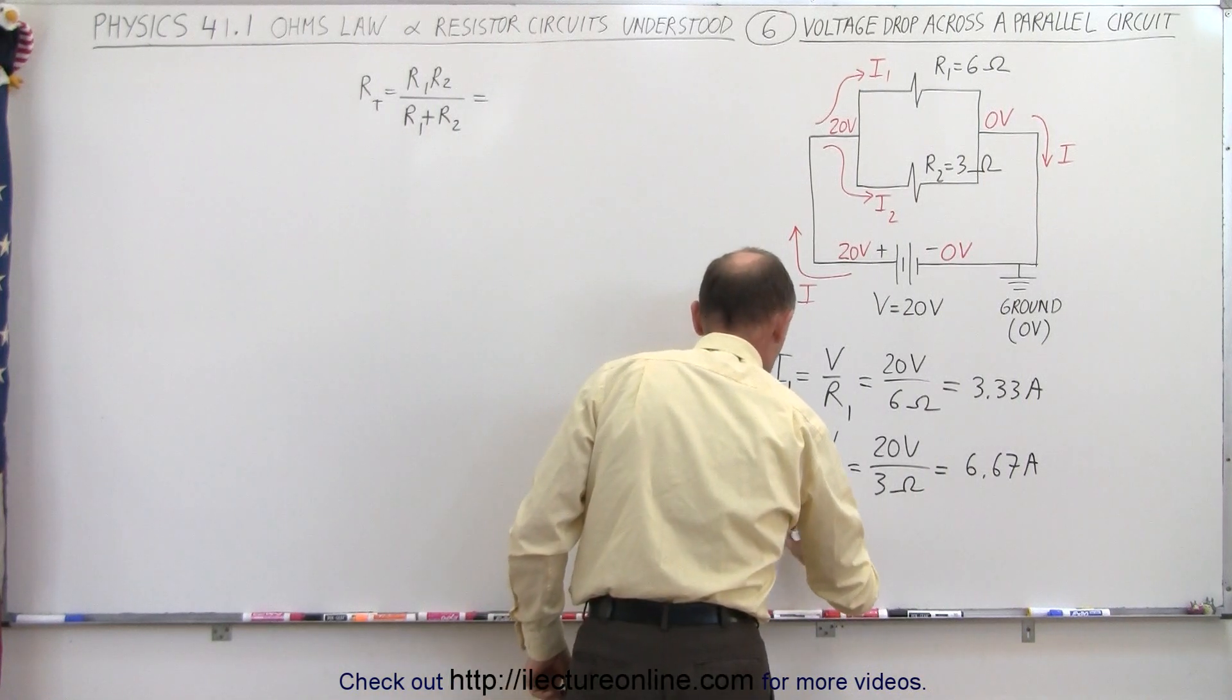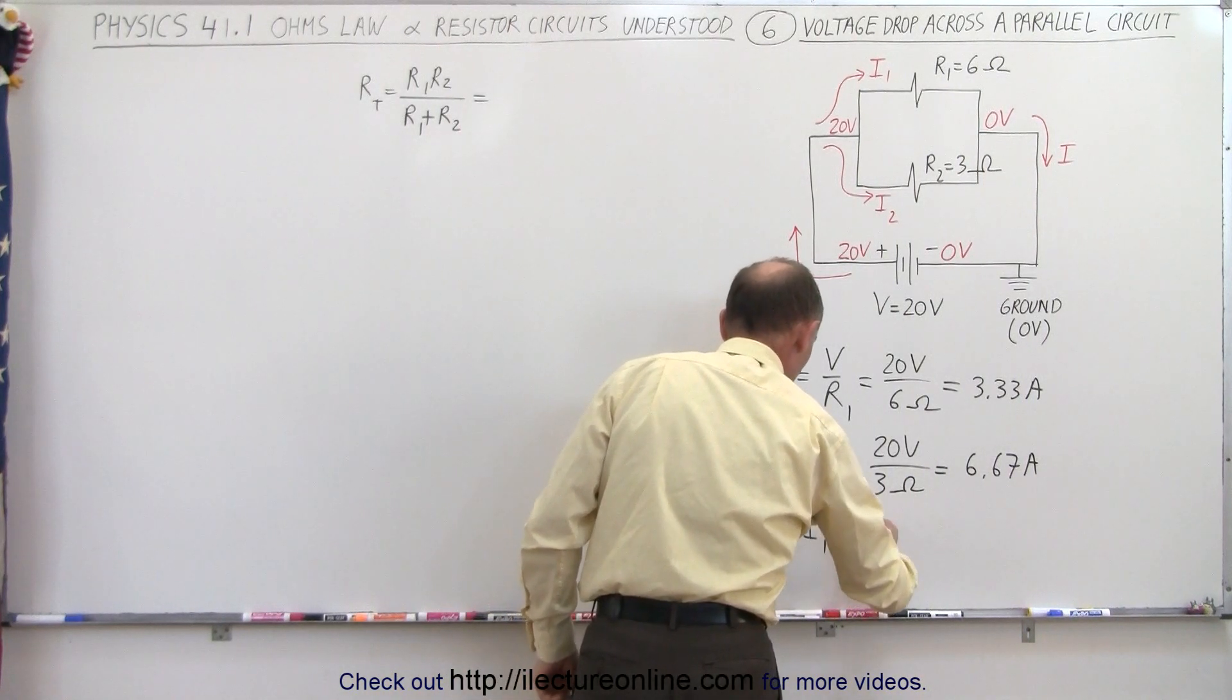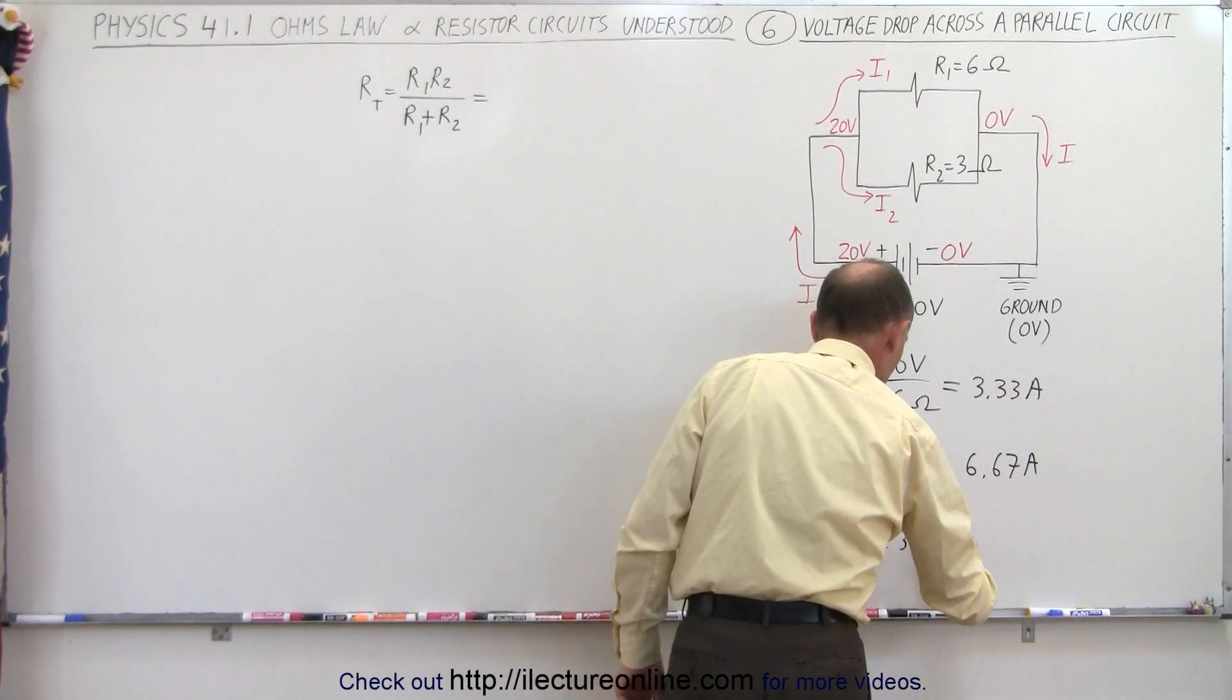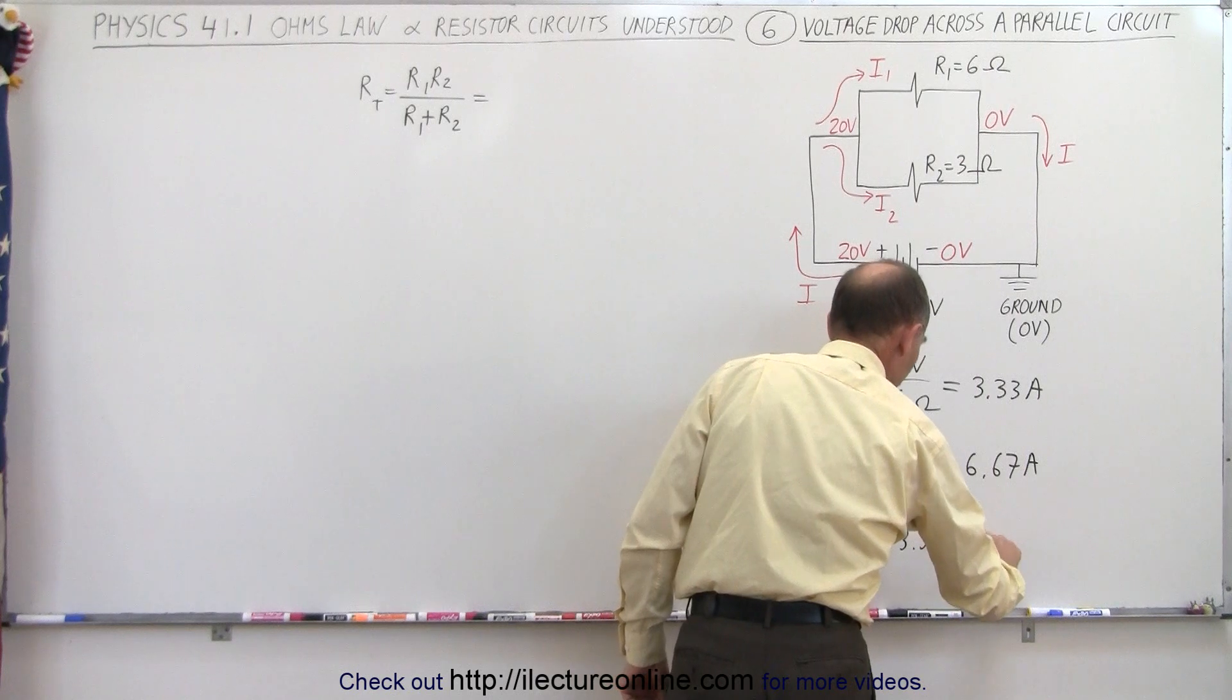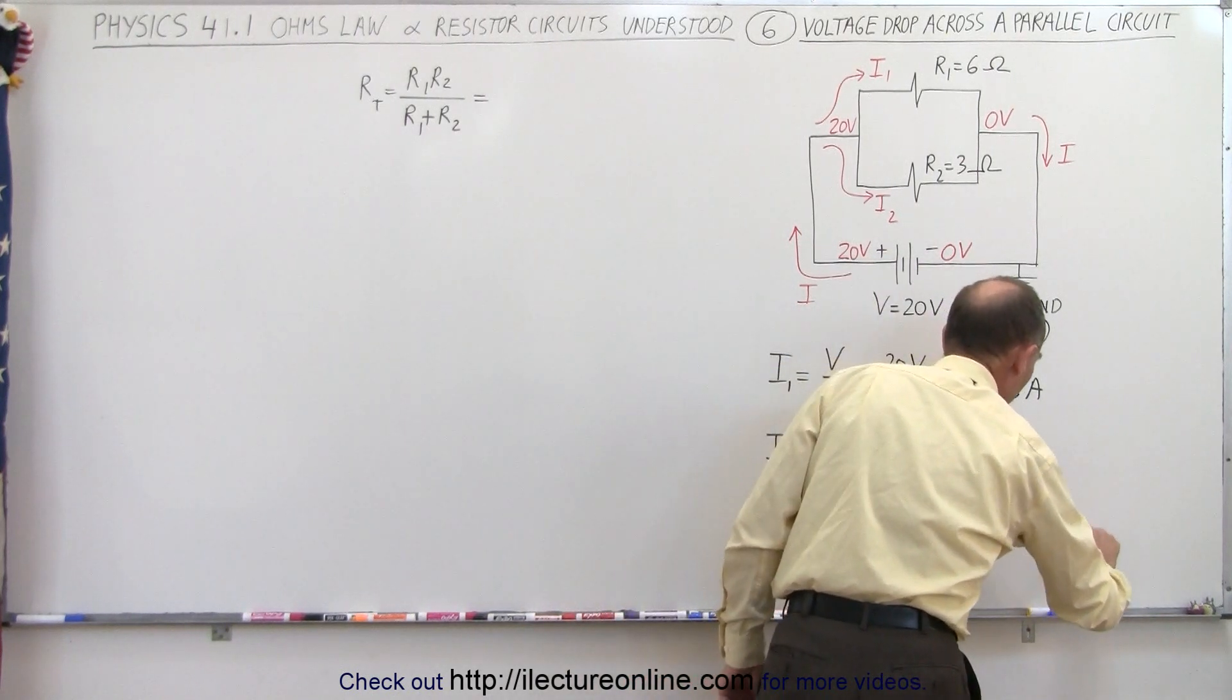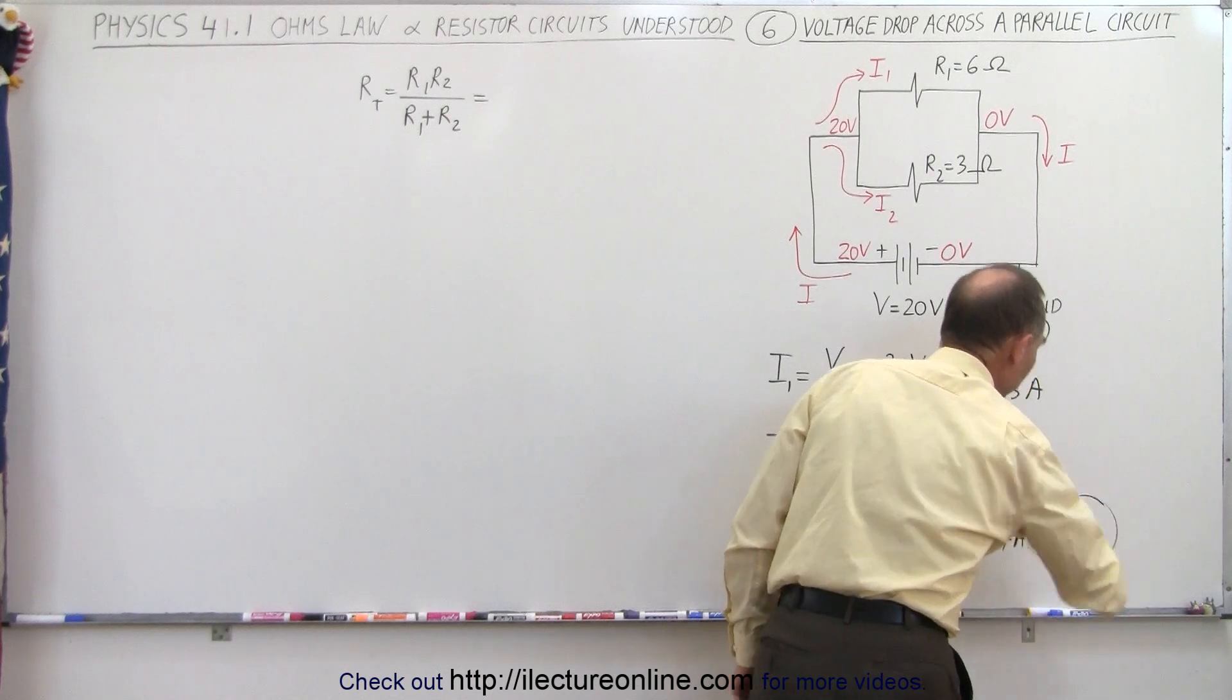So I must be equal to I1 plus I2, which is equal to 3.33 amps plus 6.67 amps. So together, that is a current of 10 amps in the circuit.